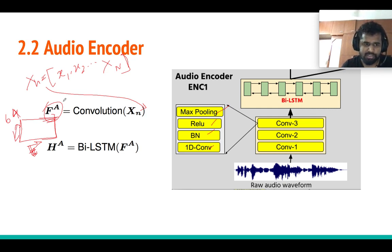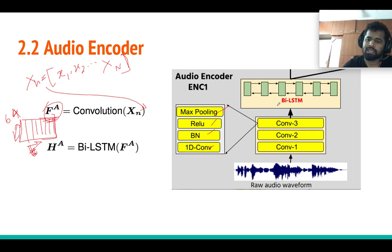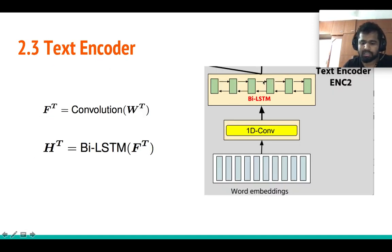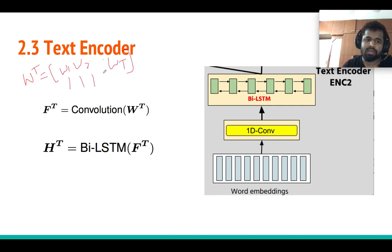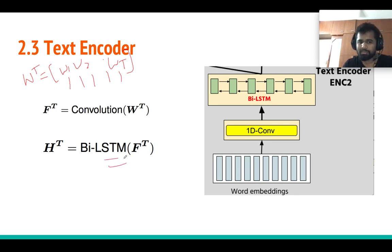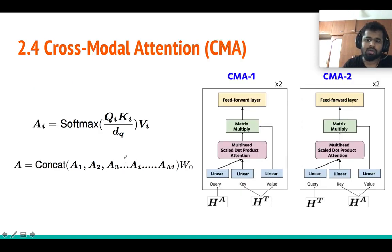This sequence of feature vectors then goes to a BiLSTM layer, whose output captures temporal information. That is the idea of the audio encoder. Similarly, the text encoder takes a sequence of word embeddings W1, W2, ..., W_T — using GloVe word embeddings in our case — which go through a 1D convolution projection layer and then a BiLSTM to capture temporal information.